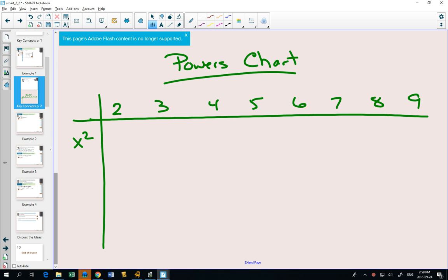And first we're going to square them. So 2 squared is 4, 3 squared is 9, 4 squared is 16, 25, 36, 49, 64, 81.